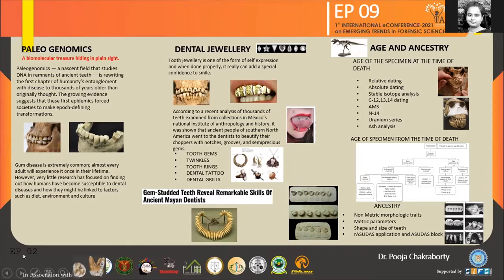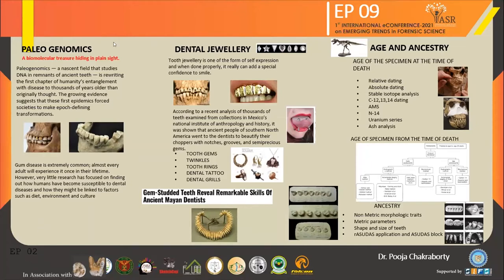Teeth can also be unintentionally modified by certain habits such as smoking a clay stem pipe or using teeth as a tool in place of scissors or pliers. Metric and non-metric features can help us determine the ancestry of the remains. We have software called rAsudas and the Asudas block which can help analyze the non-metric traits. To determine the age at the time of death, standard radiographic, histologic, or eruption pattern methods can be used, with first priority being not to destroy the historic piece of evidence.